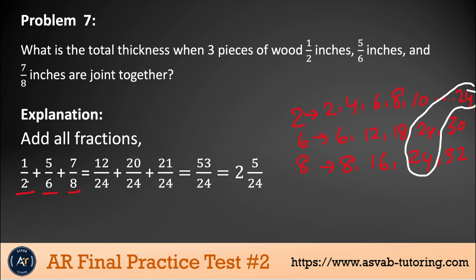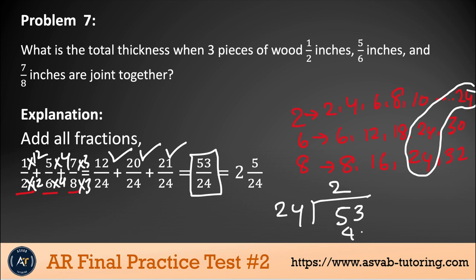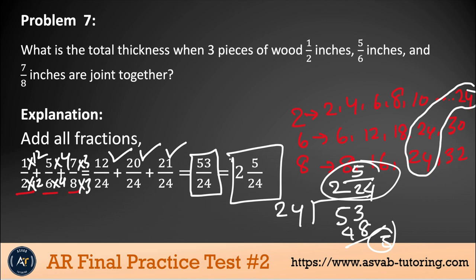Find the equivalent fractions: multiply 2 by 12 to get 24, multiply 6 by 4, multiply 8 by 3, doing the same on the numerators. That gives 12/24, 20/24, and 21/24. Adding those gives 53/24. Convert to a mixed number: 24 goes into 53 twice (48), with remainder 5. So the answer is 2 and 5/24 inches.